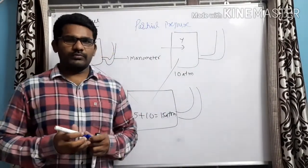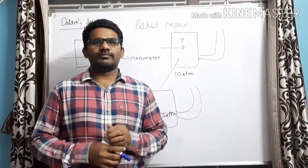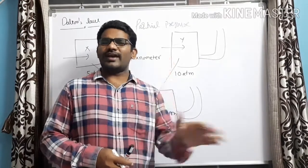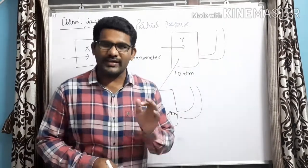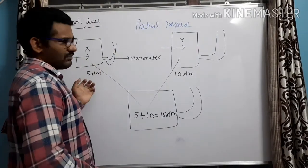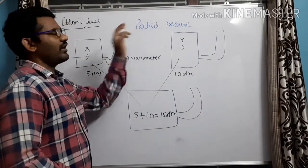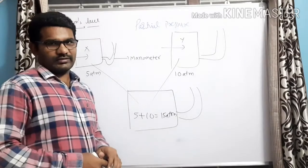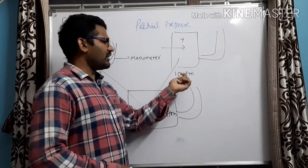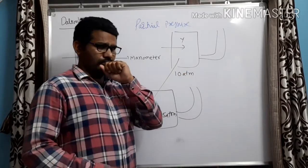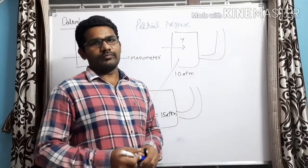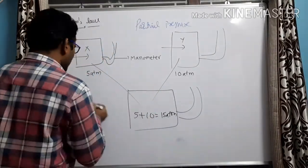Partial pressure is the pressure exerted by an individual gas. Here, when I take only gas X, it is showing 5 ATM — this 5 ATM is called the partial pressure of X. When only gas Y is taken, it is exerting a pressure of 10 ATM — this 10 ATM is called the partial pressure of Y.